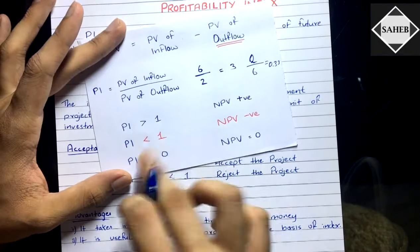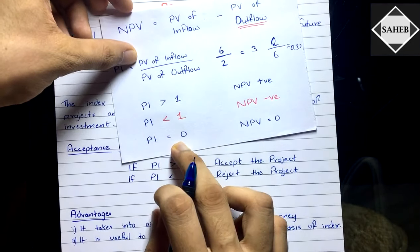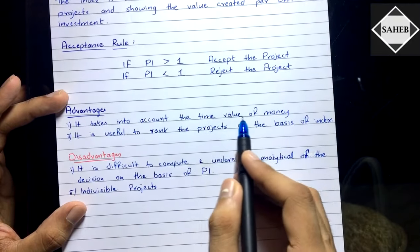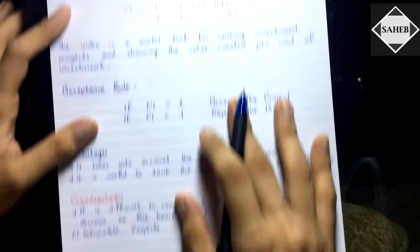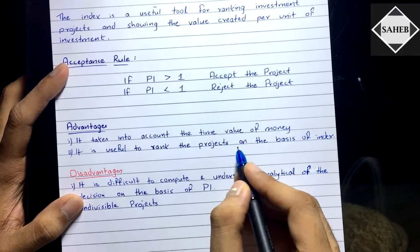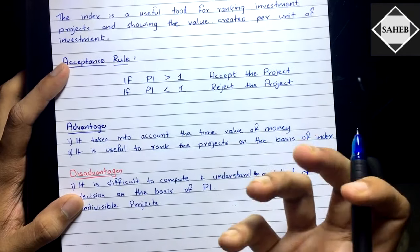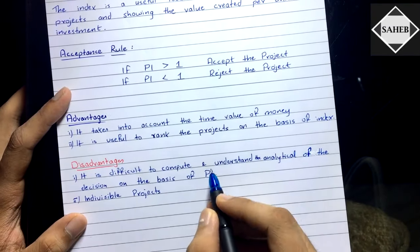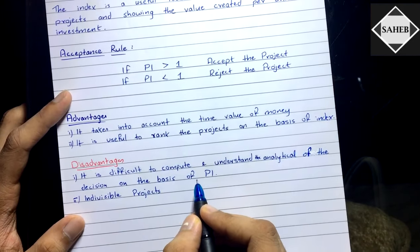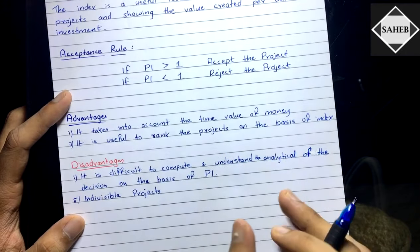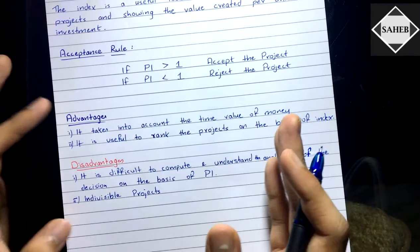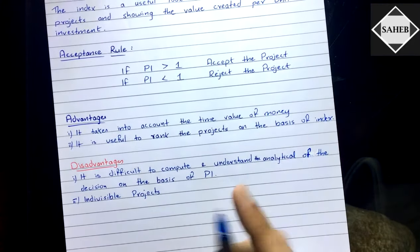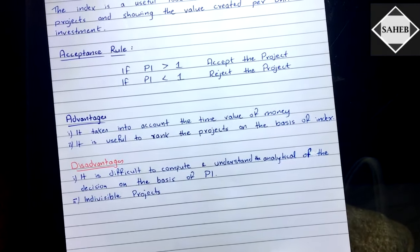Understanding the relationship between PI and NPV is important for theory questions. If PI equals one, we may accept or reject — we are indifferent, as with NPV. Advantages: PI takes into account the time value of money, since we use present values, and it is useful for ranking projects and selecting combinations of divisible projects. Disadvantage: it can be difficult to compute and understand the full analysis. Also, PI fails with indivisible projects, where you cannot split projects to form combinations.